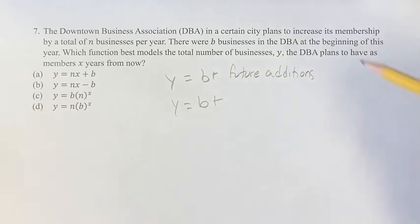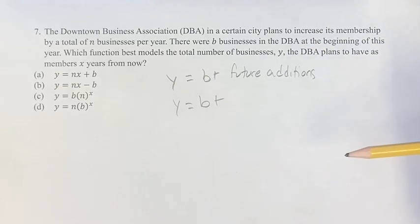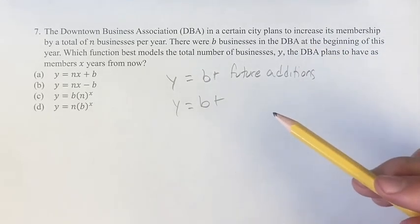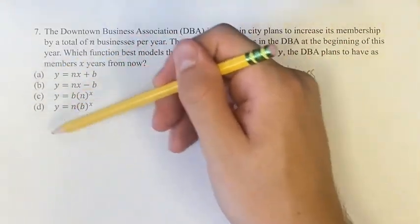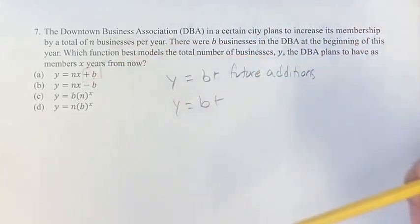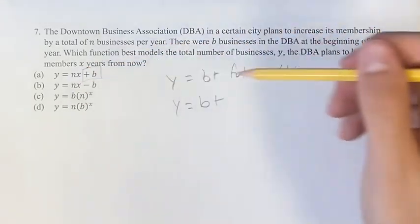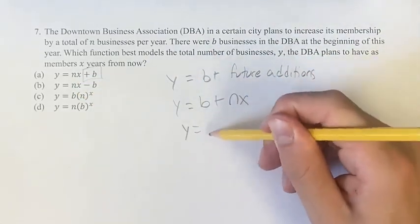Do we even have to calculate the future additions? If we don't look at this as actually solving the problem, but understanding that we have four options here, and only one of them includes a plus b on its own, we know that the future additions must be equal to nx, so therefore y is equal to nx plus b.